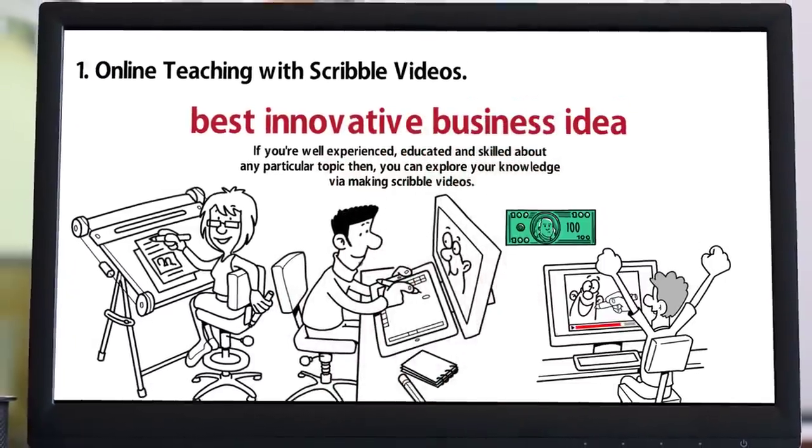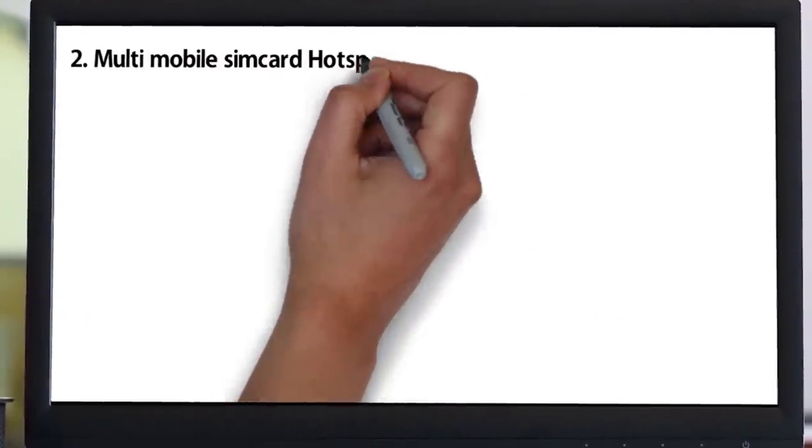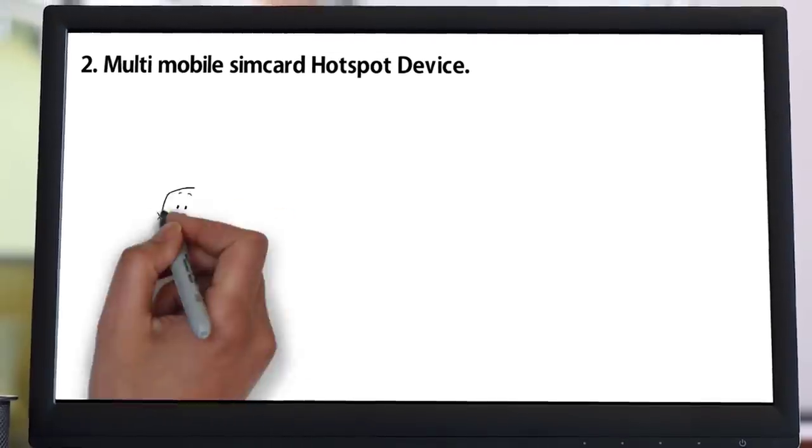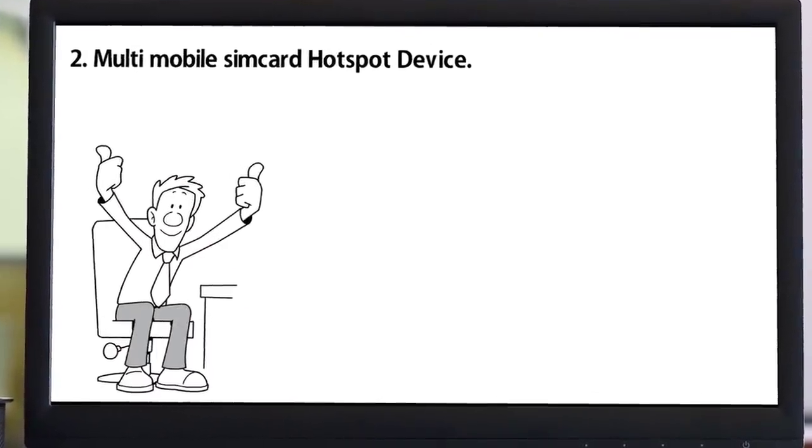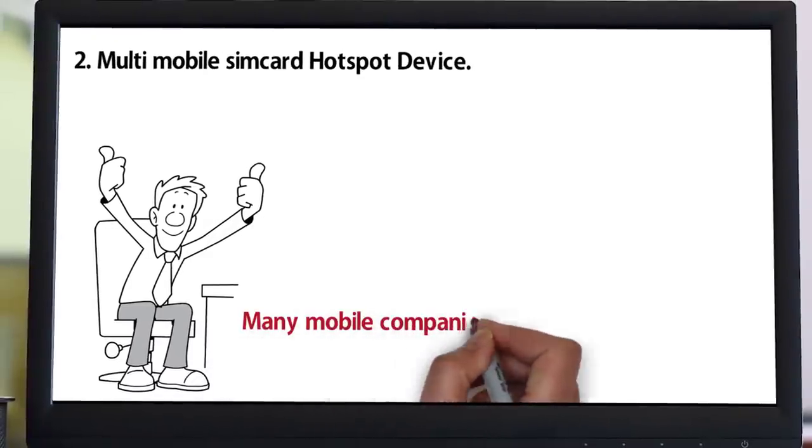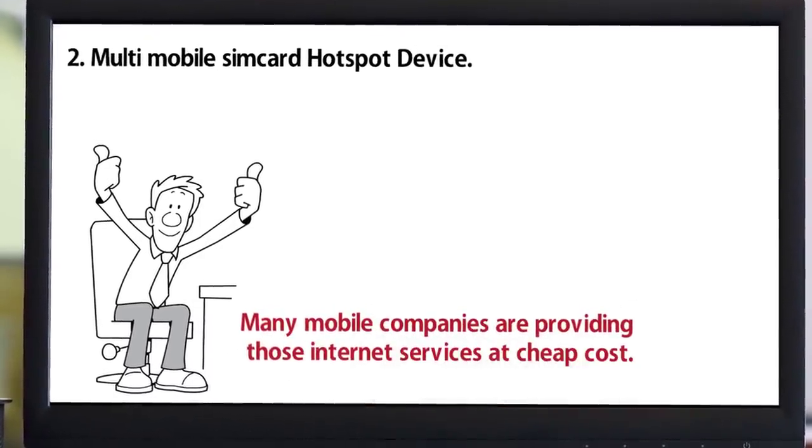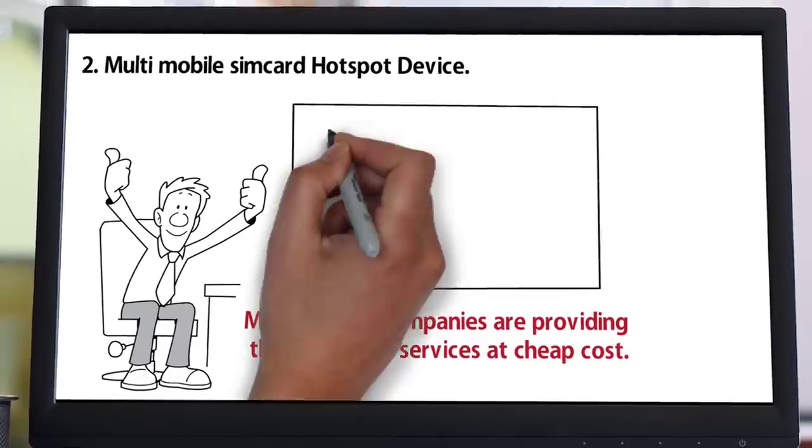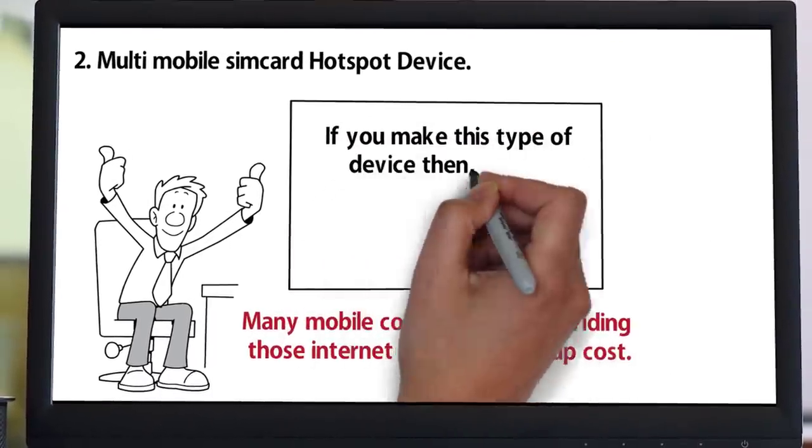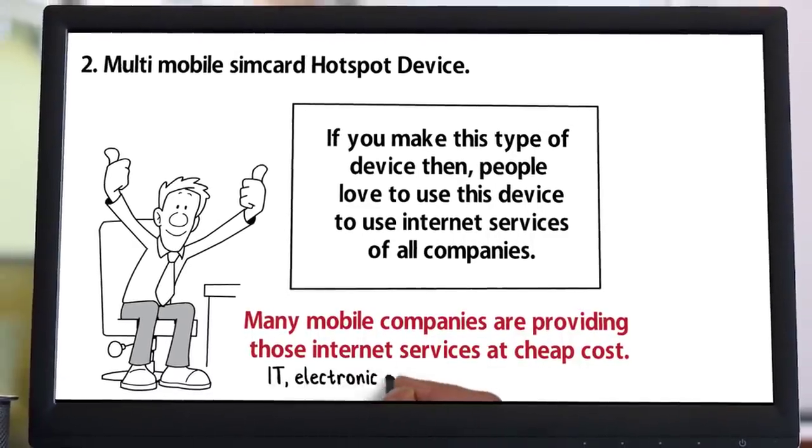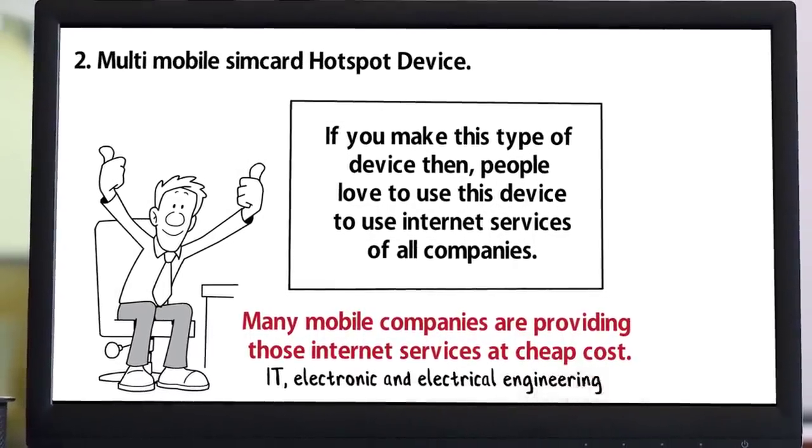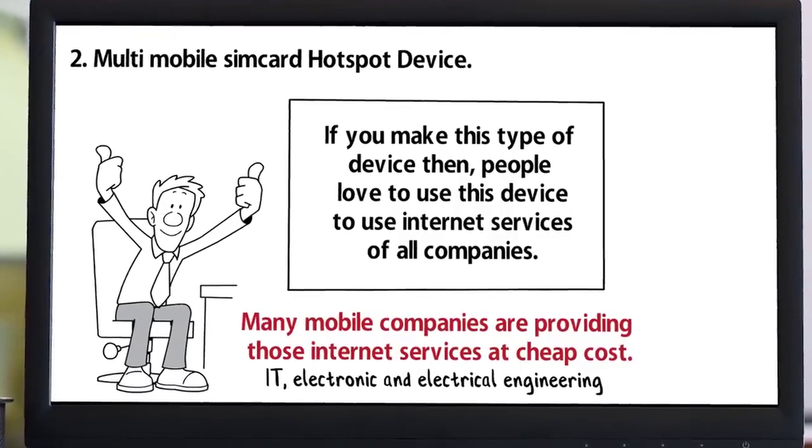Number two: Multi-mobile sim card hotspot device. Multi-sim card hotspot device is a good idea that you can go for as a startup in 2019. Many mobile companies are providing internet services at cheap cost. If you make this type of device, people will love to use it to access internet services from all companies. To make this product you have to be talented and educated about electronics and electrical engineering. You can also get help from experts.